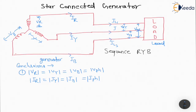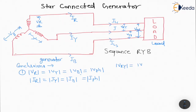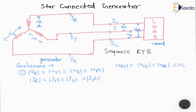For the generator, |Vr| = |Vy| = |Vb| = Vph. For the line current, we can also see that |Vry| = |Vyb| = |Vbr| = Vl.